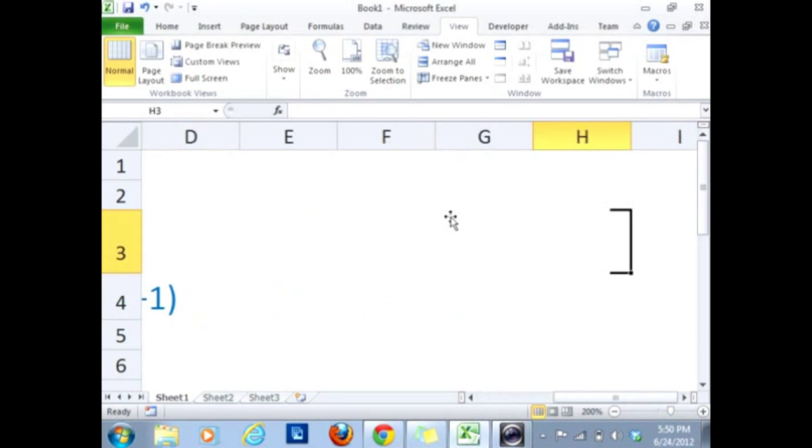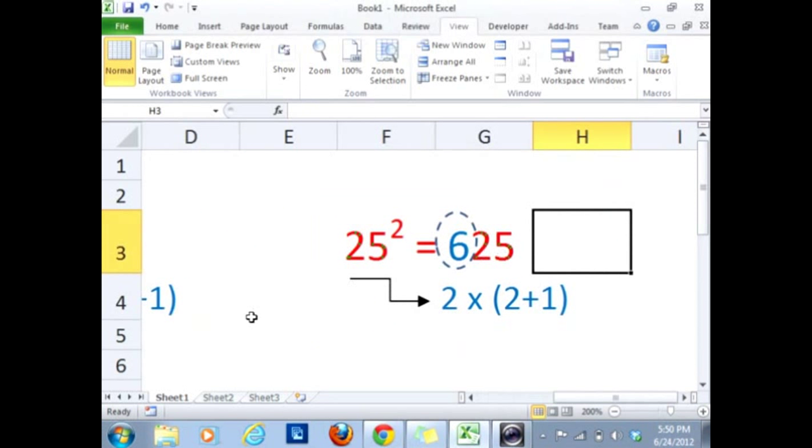Similarly, if I have 25, then again put 25 in the end, and then multiply 2 by 3. So 2 multiplied by its increment 3, and I get 6. So it is 625.